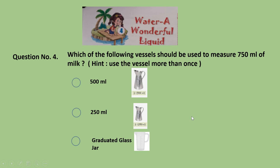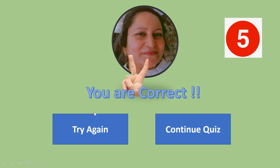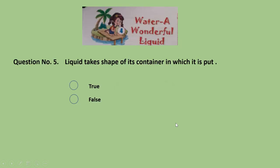Question 4: Which of the following vessels should be used to measure 750 ml of milk? The hint is: you can use the vessel more than once. Options are 500 ml, 250 ml, or a graduated glass jar. The correct answer is 250 ml, because 250 + 250 + 250 means we use this vessel 3 times. Give yourself 5 marks.